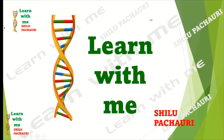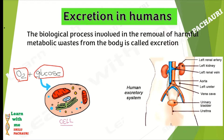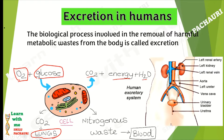Welcome to the channel Learn With Me. I am Shilu Pachauri. In our previous videos we discussed digestion and respiration, where we learned that blood receives oxygen from the lungs and glucose from the small intestine, which is part of the digestive system. Blood carries these to the cells, where metabolic activities result in the formation of carbon dioxide, energy, and water. Some waste material is also produced in the cells. The carbon dioxide produced gets transferred to the blood and ultimately reaches the lungs, from where it exits the body through the nose. On the other hand, the nitrogenous waste produced by cells during metabolic activities also gets transferred into the blood.